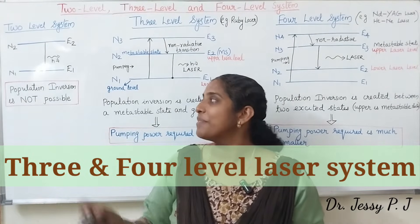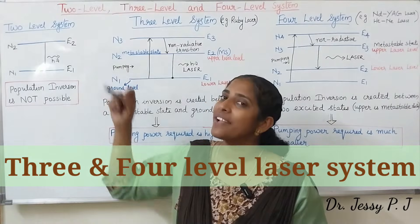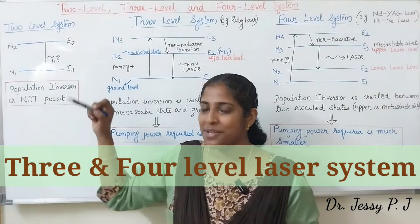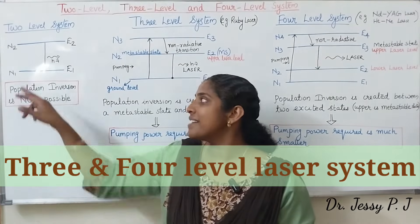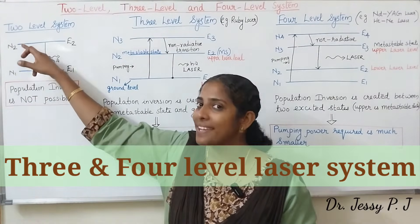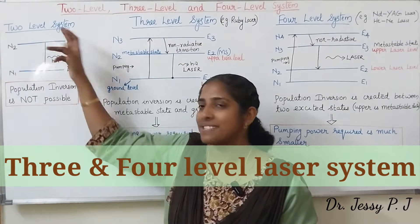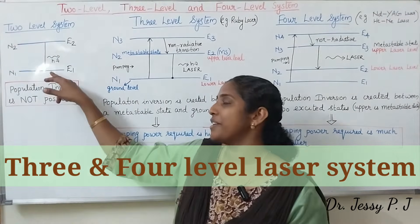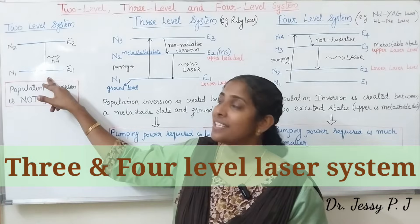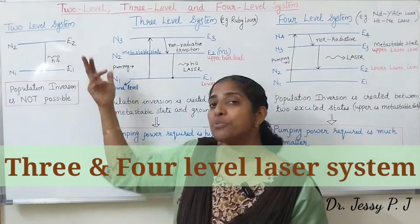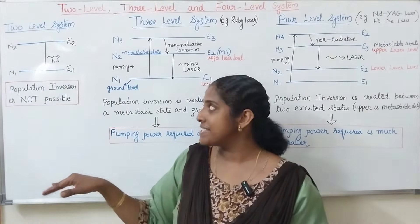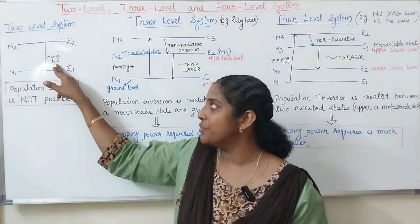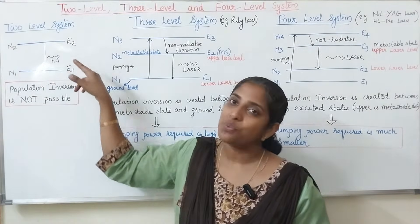In the 2 level system, we have 2 energy levels E1 and E2. E1 is the lower level and E2 is the higher level. By pumping method, we can raise the atoms from the lower level to the excited level. This excited level has a short lifetime, so atoms will transition back to the lower level. If the transition is radiative, it produces radiation of frequency nu with energy E2 minus E1.